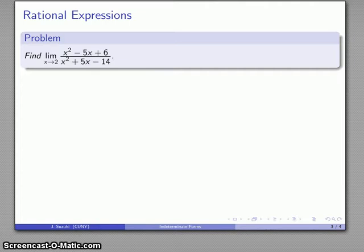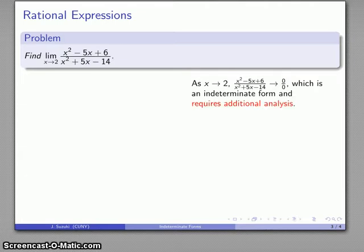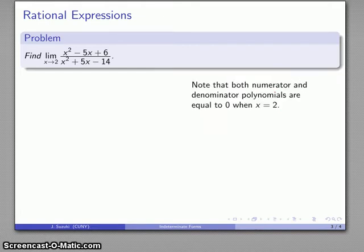So, let's consider that problem again. So again, as x goes to 2, this looks like it's going to 0 over 0. It's an indeterminate form, and we have to do some additional analysis. Now one thing that we might notice here is that part of the reason that we're having problems is that numerator and denominator are both equal to 0 when x is equal to 2.